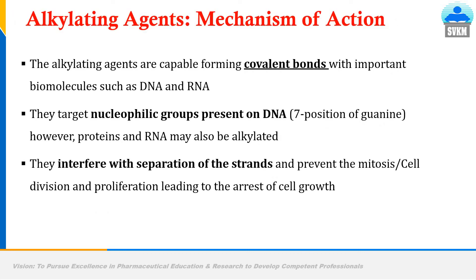Let's summarize the mechanism of action of alkylating drugs. Alkylating drugs are capable of forming covalent bonds with important biomolecules like DNA and RNA. They target the nucleophilic groups present on the DNA, especially the 7th position of guanine. Proteins and RNA may also be alkylated. Alkylating drugs interfere with the separation of the strands, preventing the process of mitosis, cell division, and cell proliferation, ultimately leading to arrest of cell division and cell growth of growing cancerous cells — this is how they prove to be anti-cancer drug molecules.